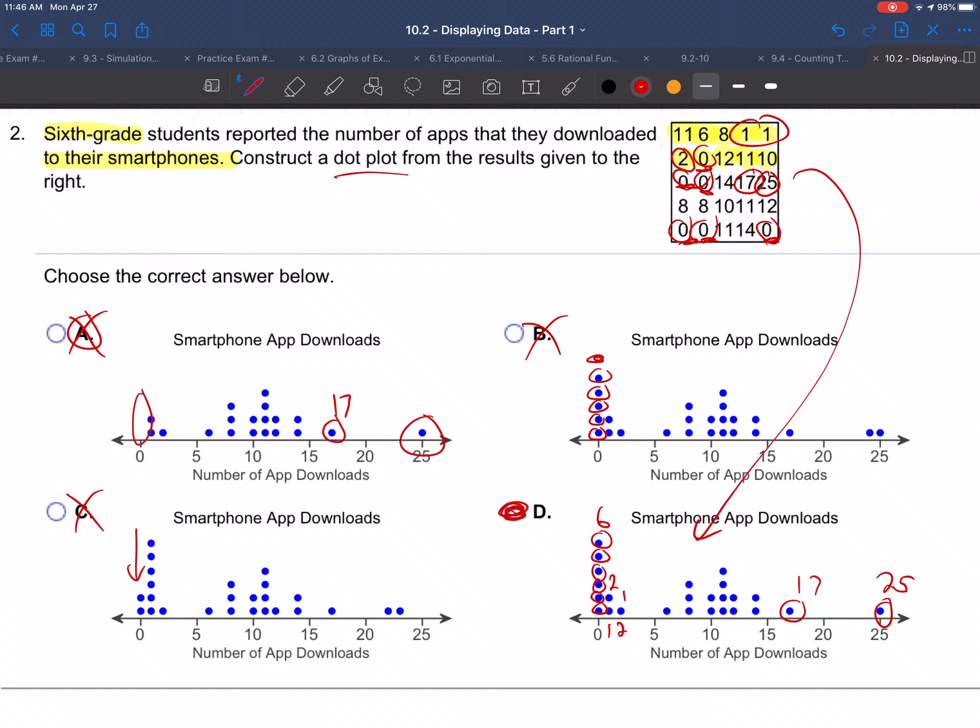That dot plot fits this data. So that's what a dot plot is. It's just a bunch of dots where the numbers are. And do you see the value of a dot plot? You can just kind of look at this dot plot and you get a feel for where the numbers are. Like, you know, most of the 6th graders download zero apps. That's where most of them are. A big chunk in the middle around 10 or 11. And then one crazy person up at 25.